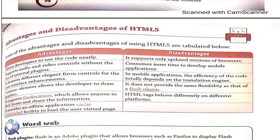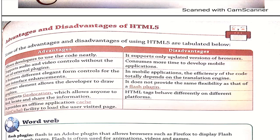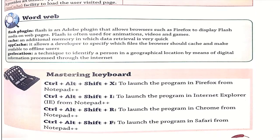There are various disadvantages of HTML5 as well. It supports only updated versions of browsers. It consumes more time to develop mobile applications. In mobile applications, efficiency of code totally depends on the translation engine. It doesn't provide the same flexibility, and HTML tags behave differently on different platforms.